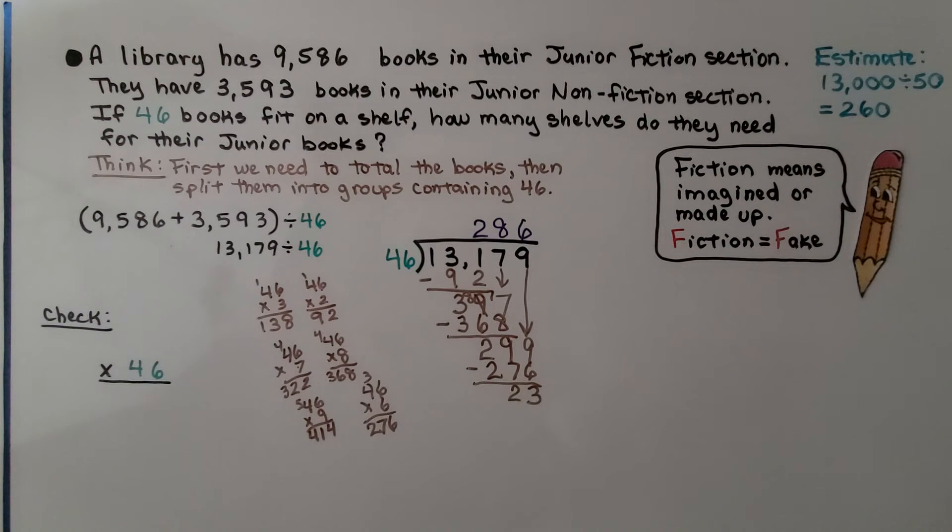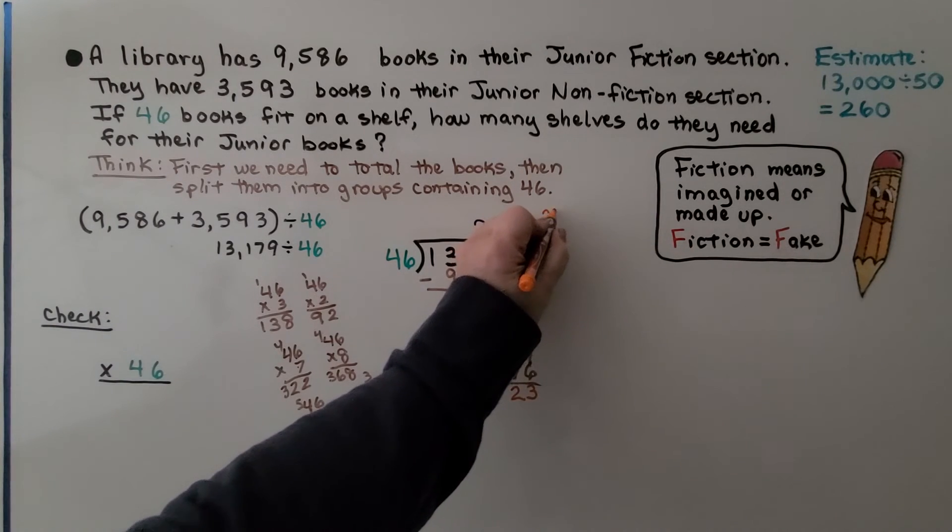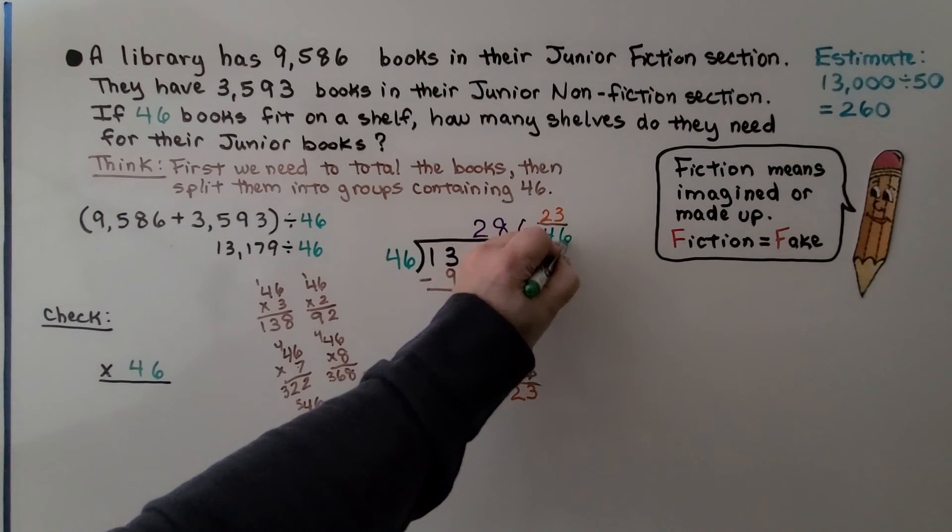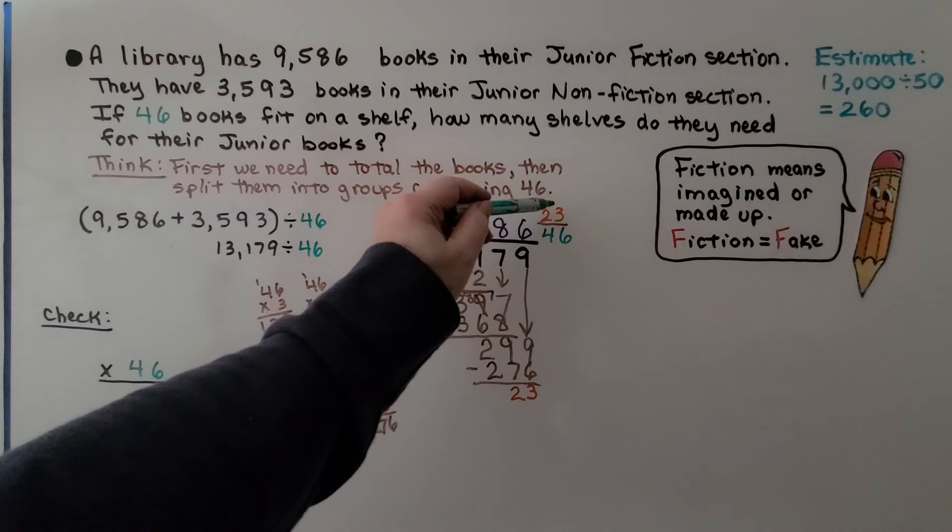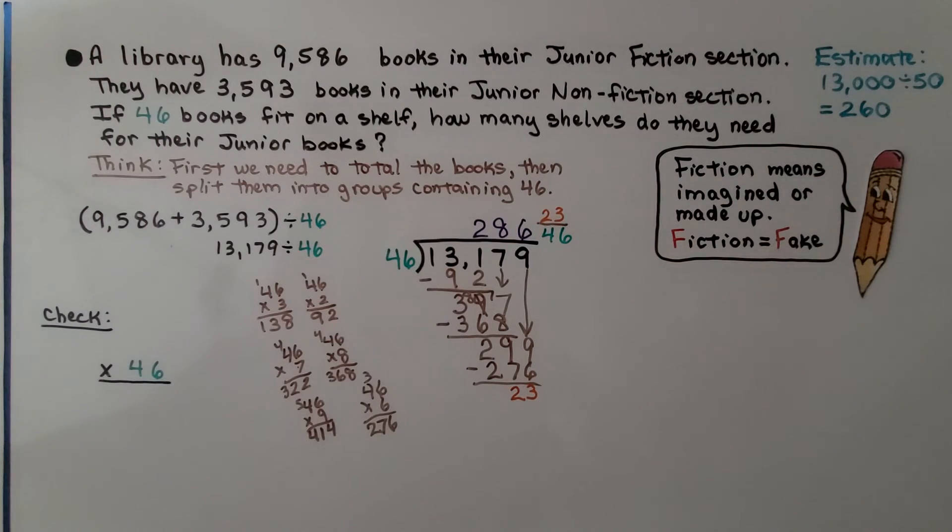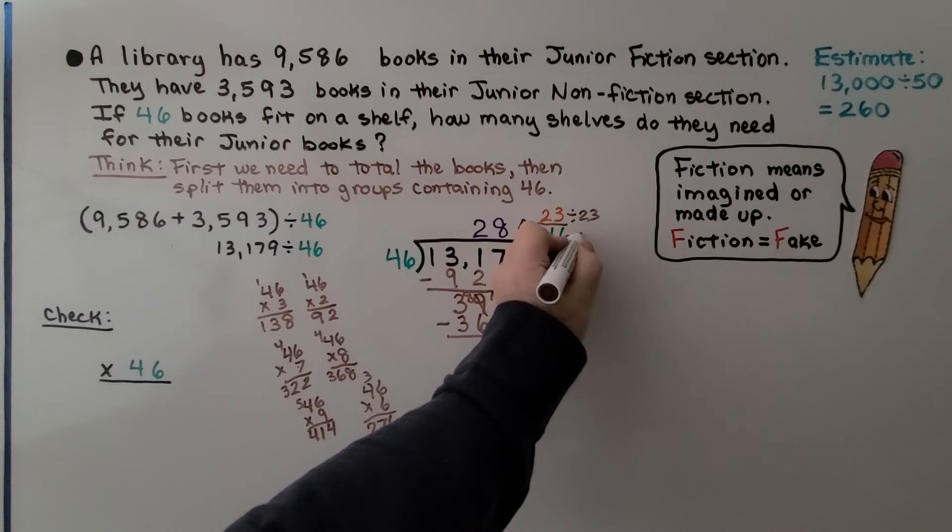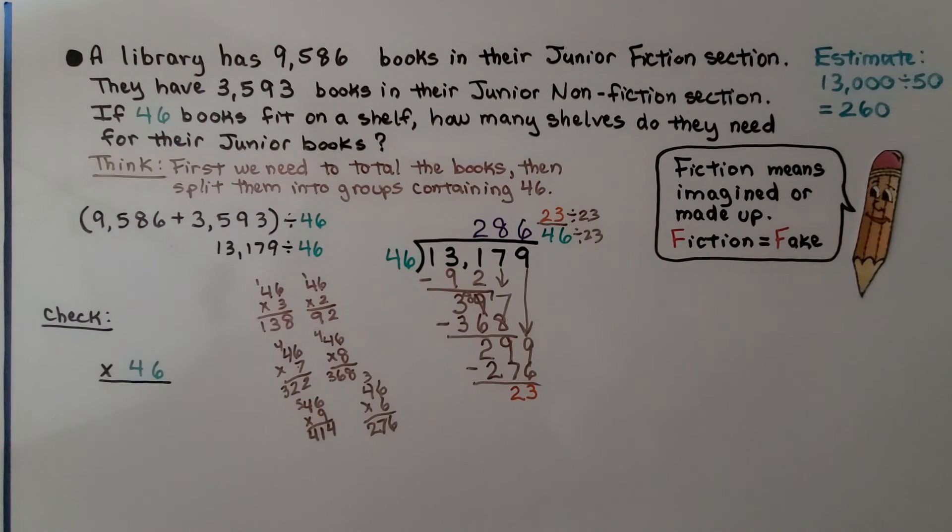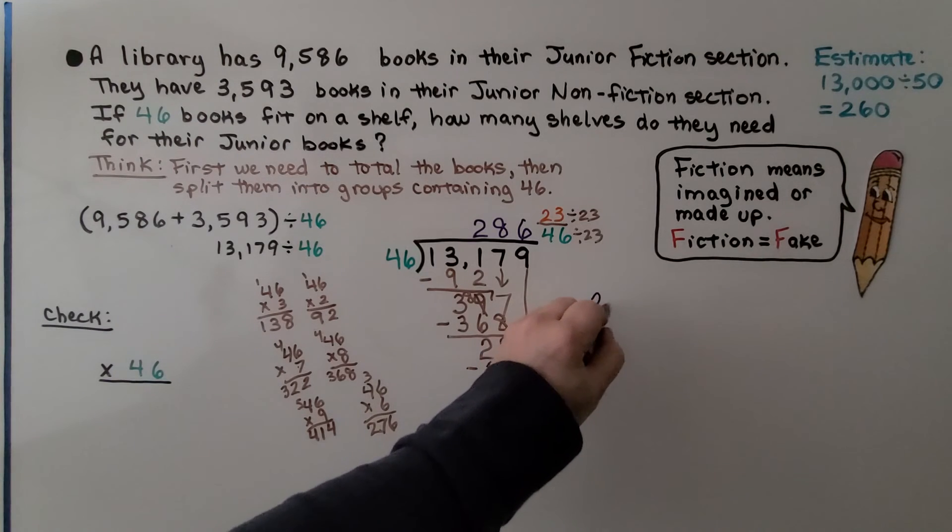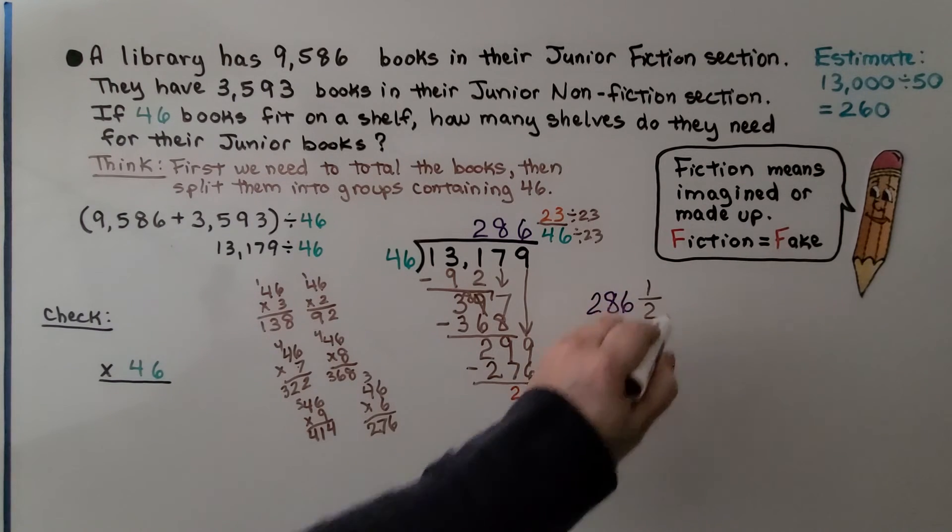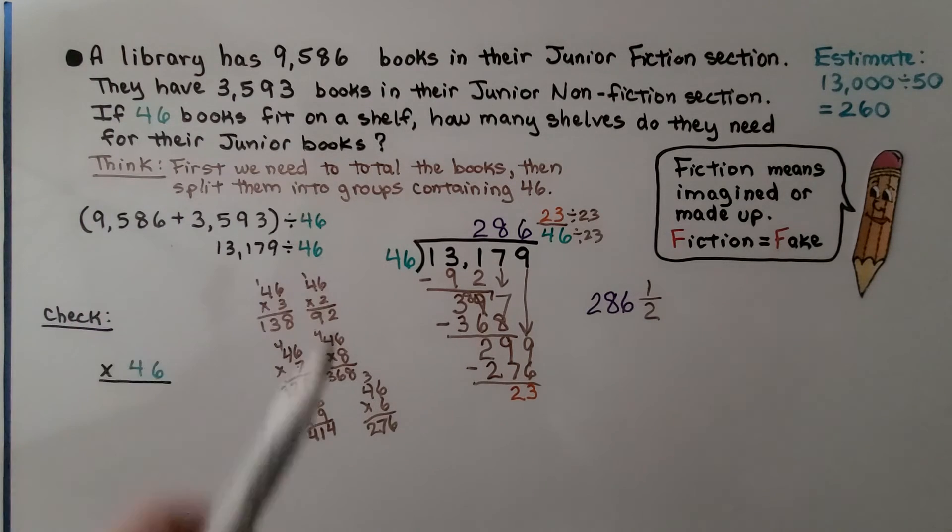And remember, we can write this as a fraction. We can make this 23 the numerator. We can make that 46 the denominator. And 23 is half of 46. We can divide the numerator and denominator by 23 as the greatest common factor. That means we have 286 and a half.